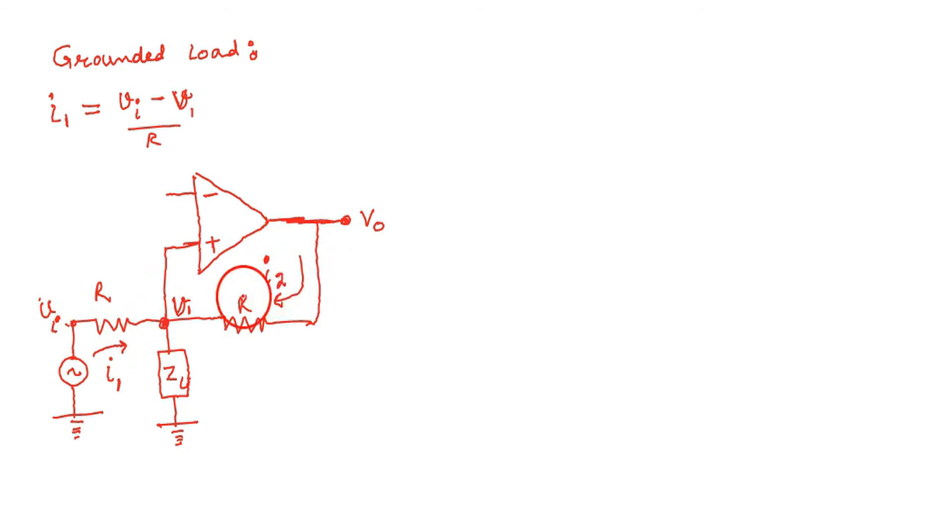Here the current flowing is I2. I2 is again the potential difference, V0 minus V1 divided by R. So this is the second current. Now there will be current through load, it is IL. So what is the relation of IL? The relation is I1 and I2.